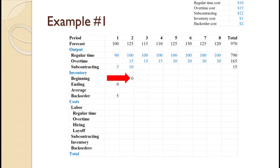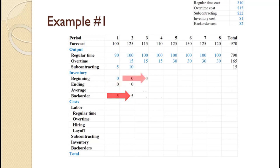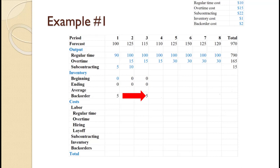The beginning inventory in period 2 is just the ending inventory for period 1. It will always be the case that the beginning inventory for any period is just the ending inventory for the prior period. We produce 125 but need 130 — because we have demand of 125 and 5 backorders that need to be filled — so ending inventory is again 0 and we keep 5 backordered. For period 3, beginning inventory is 0. We need 115 to fulfill the demand of 110 plus the 5 backordered units, but only make 115, so ending inventory is 0 and we keep 5 backordered.